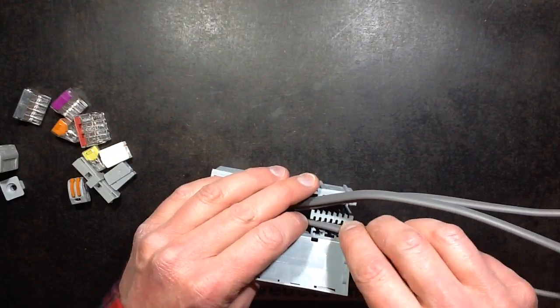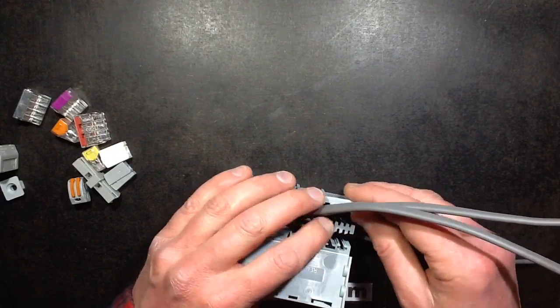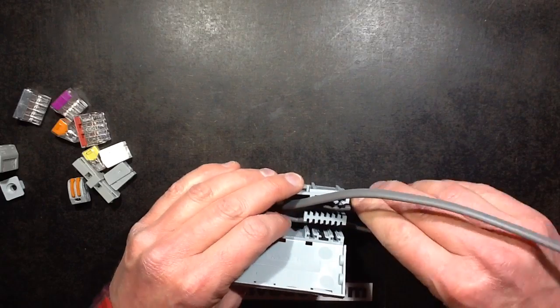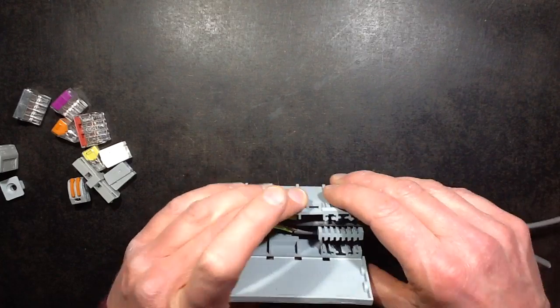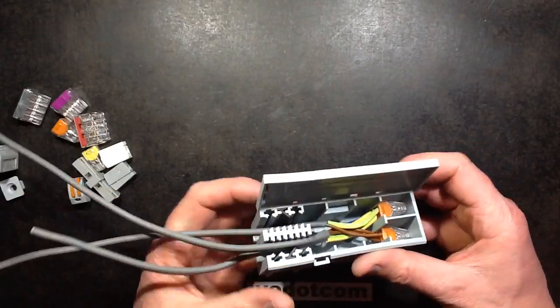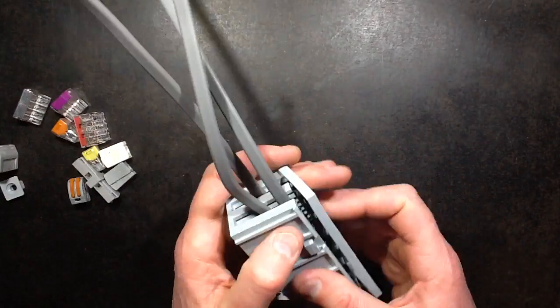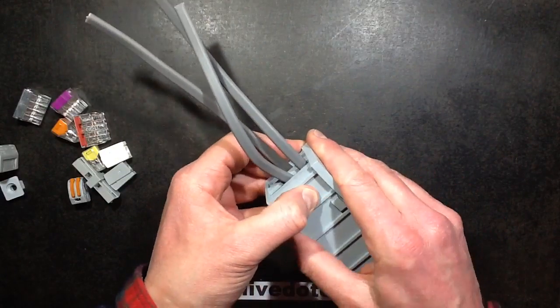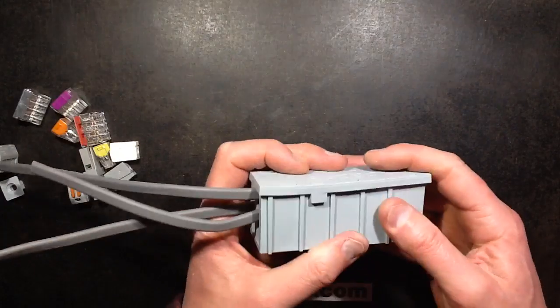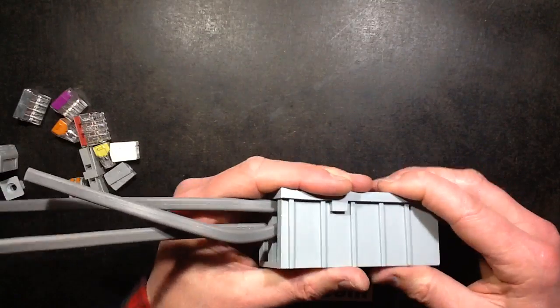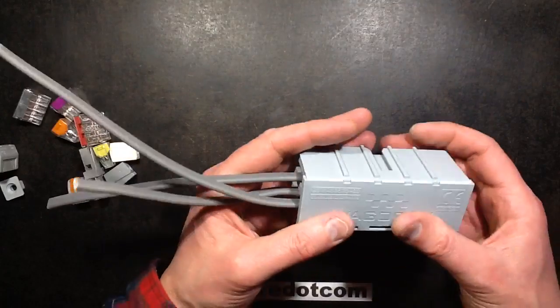Then just press these into the strain relief so you can just part them away with it to make it easier. Once you've done that you just close the lid down, it's quite a tight fit and that actually squeezes the strain relief grips. That's it, now fully connected.